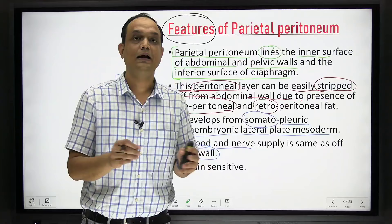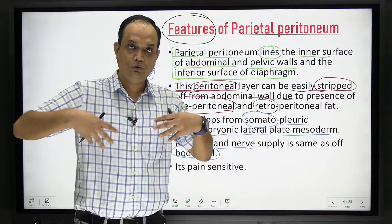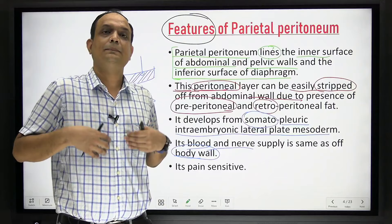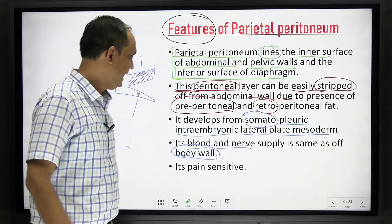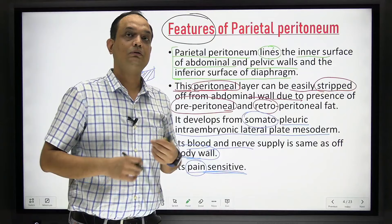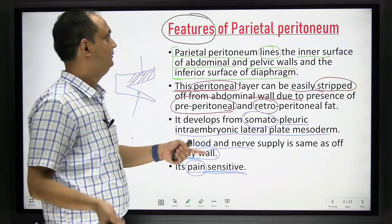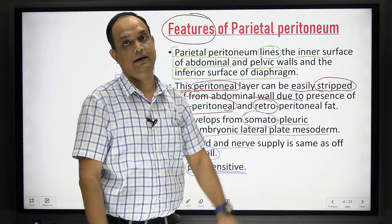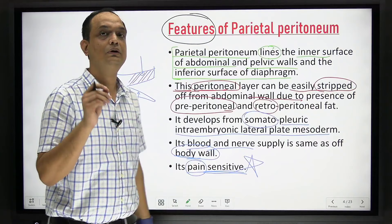The parietal peritoneum is supplied by the same nerves as the body wall — T7, T8, T9, T10, T11 — the lower intercostal nerves, also called abdominal nerves. They supply the anterior abdominal wall and also this parietal peritoneum. Because it is supplied by somatic nerves, it is pain sensitive. If you cut the parietal peritoneum, the patient will have severe pain. So if asked whether cutting parietal peritoneum causes pain — the answer is yes.